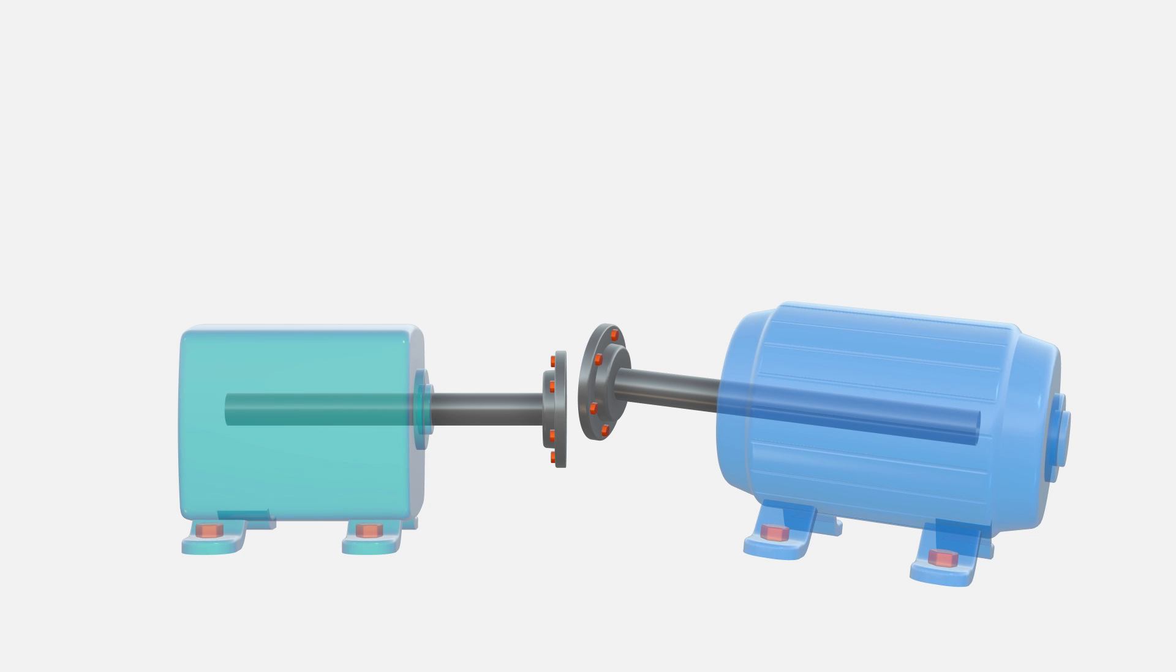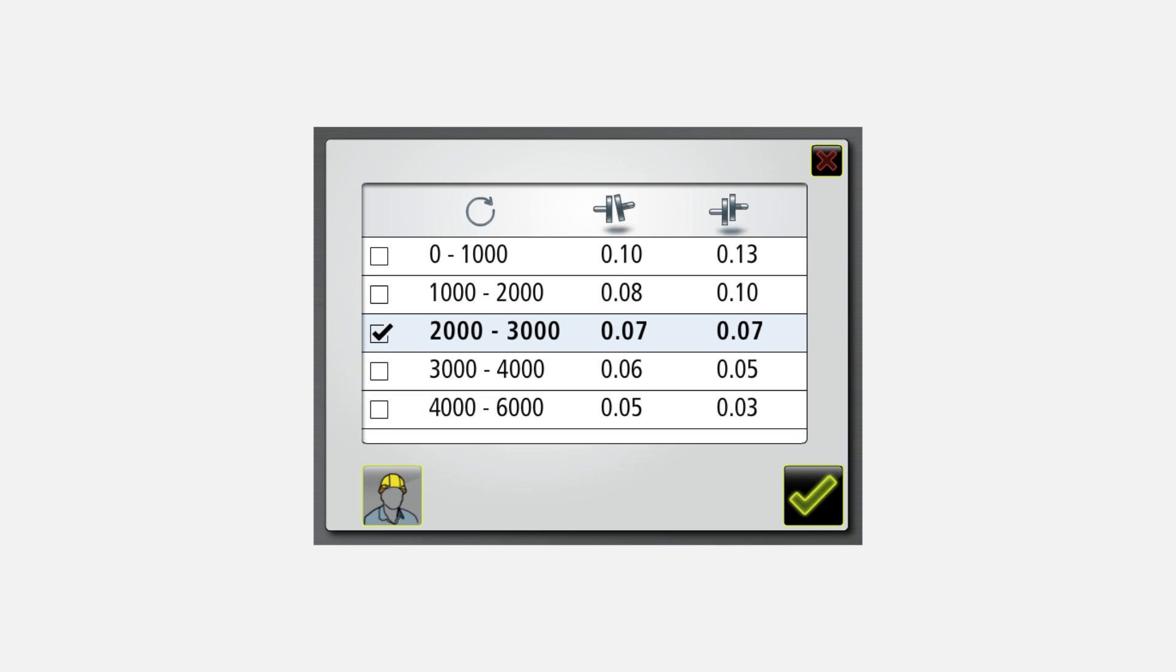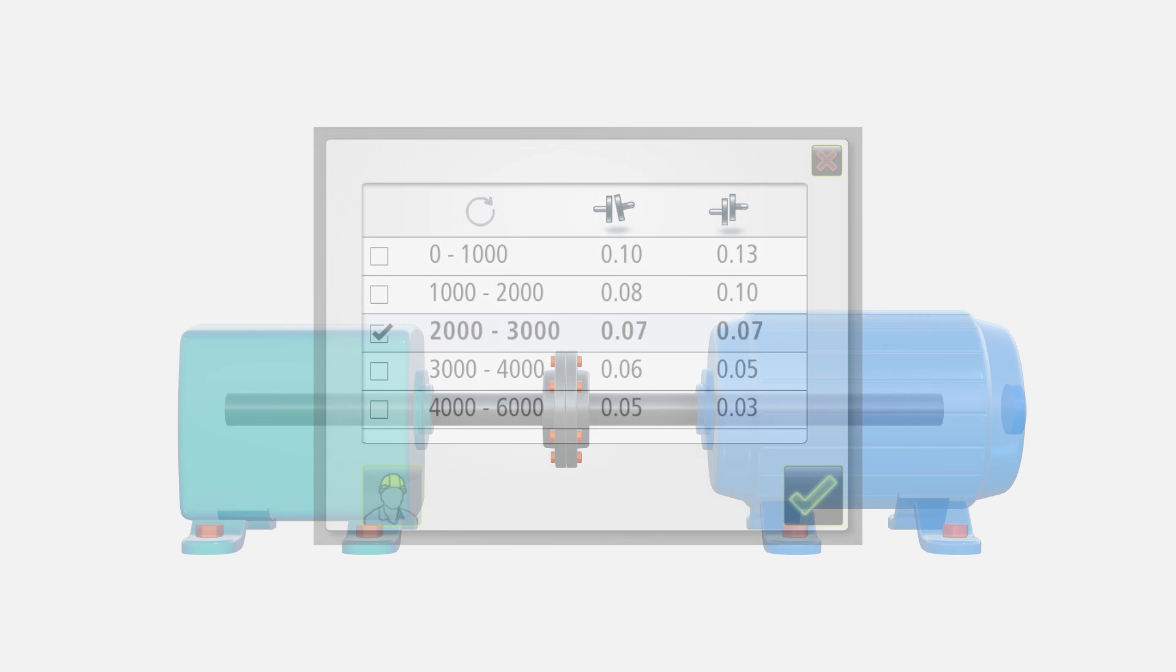For this reason, manufacturers of rotating equipment have established tolerances, defining the maximum acceptable levels of angular and offset misalignment for their machines.